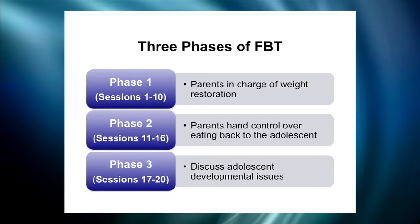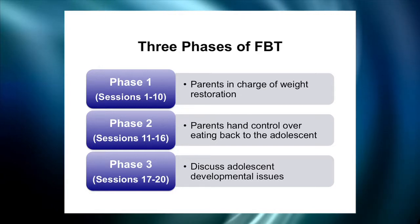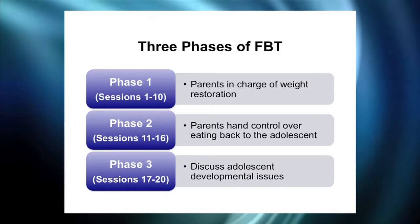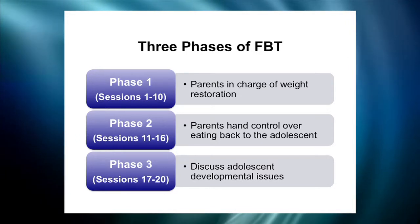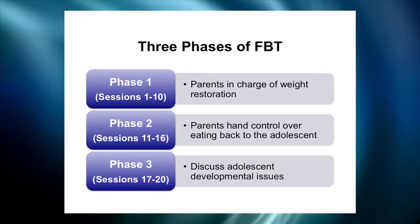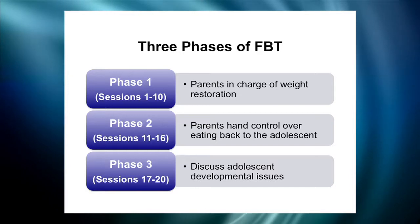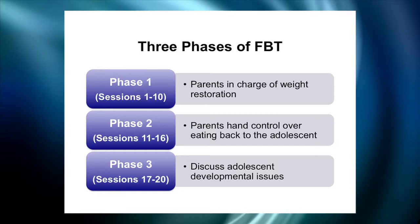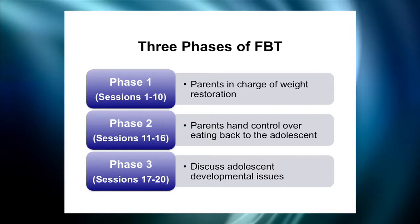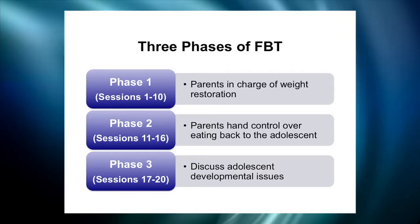Handing control back looks very different for an eleven or twelve-year-old compared to someone who is sixteen, seventeen, or eighteen. The treatment should be developmentally sensitive and tailored to the appropriate stage of adolescent development, as well as sensitive to the degree to which the illness has interrupted adolescent development, and to the family's practices around eating, child-rearing, and accommodating adolescent independence.